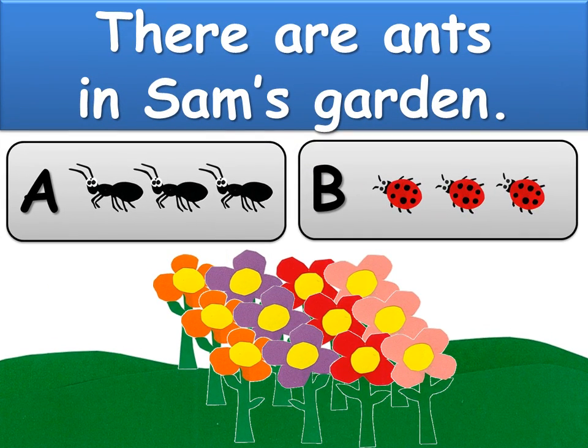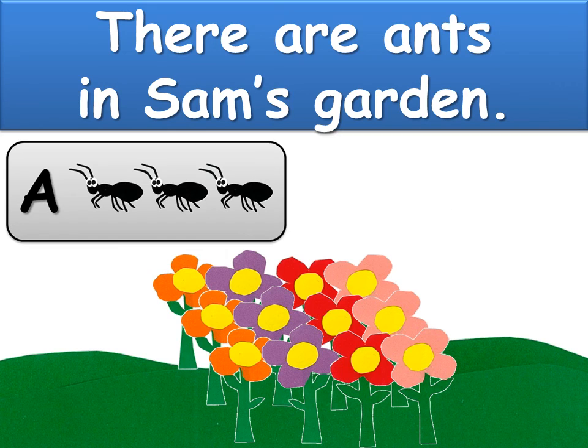There are ants in Sam's garden. Is that A or B? The answer is A.